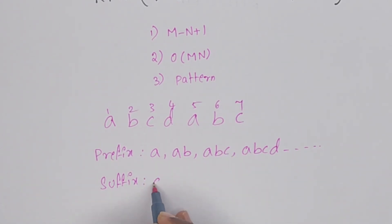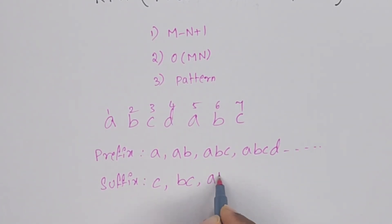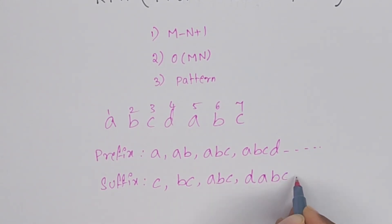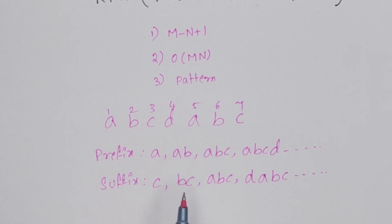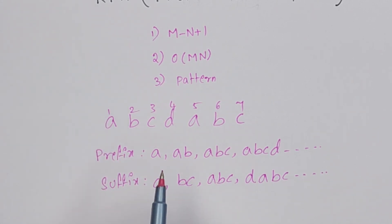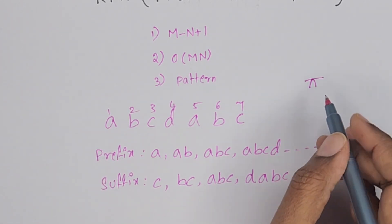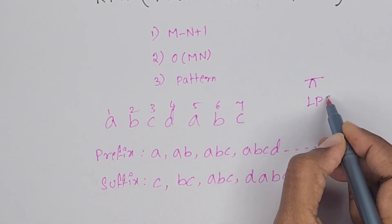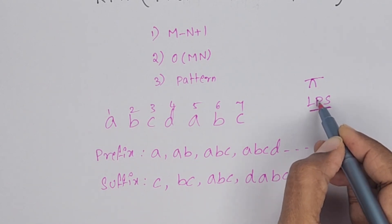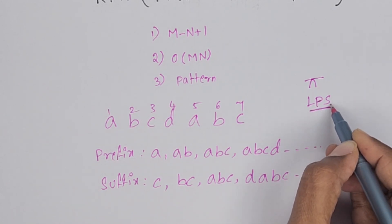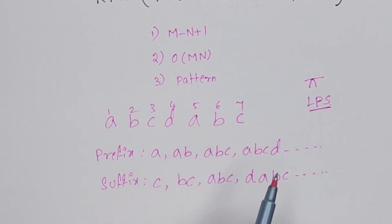So C is a suffix, BC is a suffix, ABC is a suffix, DABC is a suffix. These are the suffixes. So a few prefixes and suffixes have been written. In KMP, we have to create a Pi table or LPS table. LPS means Longest Prefix Same as Suffix.